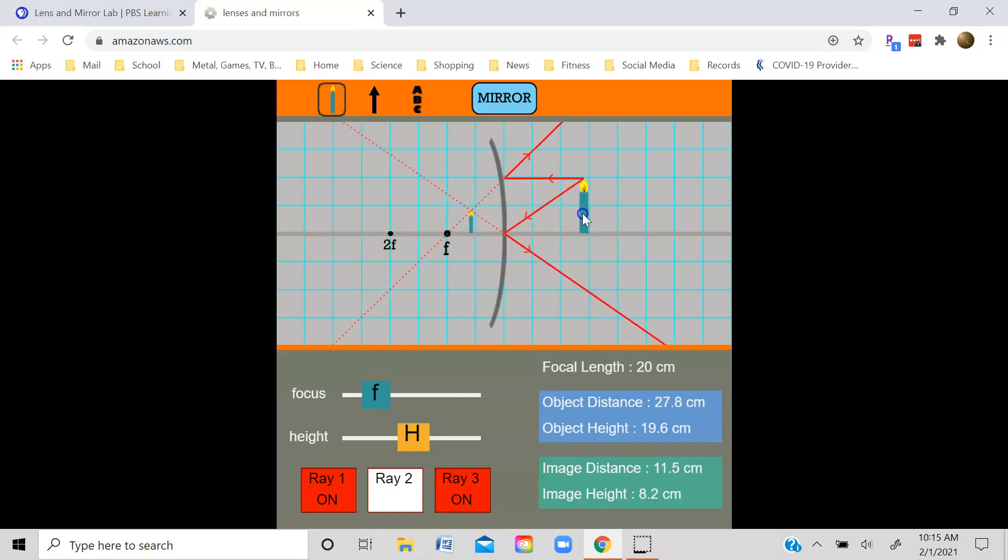There is a third light ray that is sometimes drawn in these situations that I typically don't draw in lecture. That's ray number two. Ray number two is drawn from the tip of the object here and then down towards the focus on the other side of the mirror. It then reflects parallel to the axis. And if you then take this reflected light ray and you extend it back behind the mirror, it then passes through the tip of the image right here.